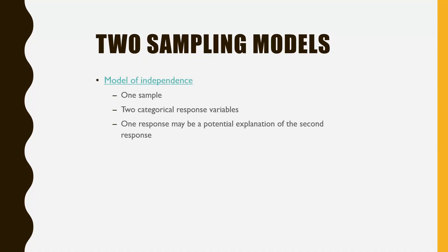First I want you to consider two possible sampling models — think about how you actually conducted the study. The first model is the model of independence, where we obtain one sample of data and then measure individuals in that sample based upon two categorical variables. We ask individuals their responses on two variables; one response may be a potential explanation of the second, or we could just be looking at an association between the two. This is called the model of independence because we're wondering if the two variables are independent of one another.